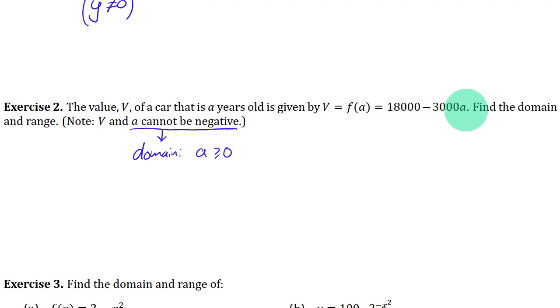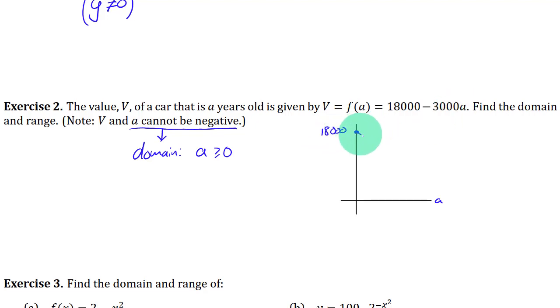But is that all does that completely describe the domain? It looks like this is going down. So like if you're going to graph this function and you plug in a equals 0 you're going to get 18,000. And it's going to have a slope of negative 3,000. So it's a straight line and at some point here it's going to cross.